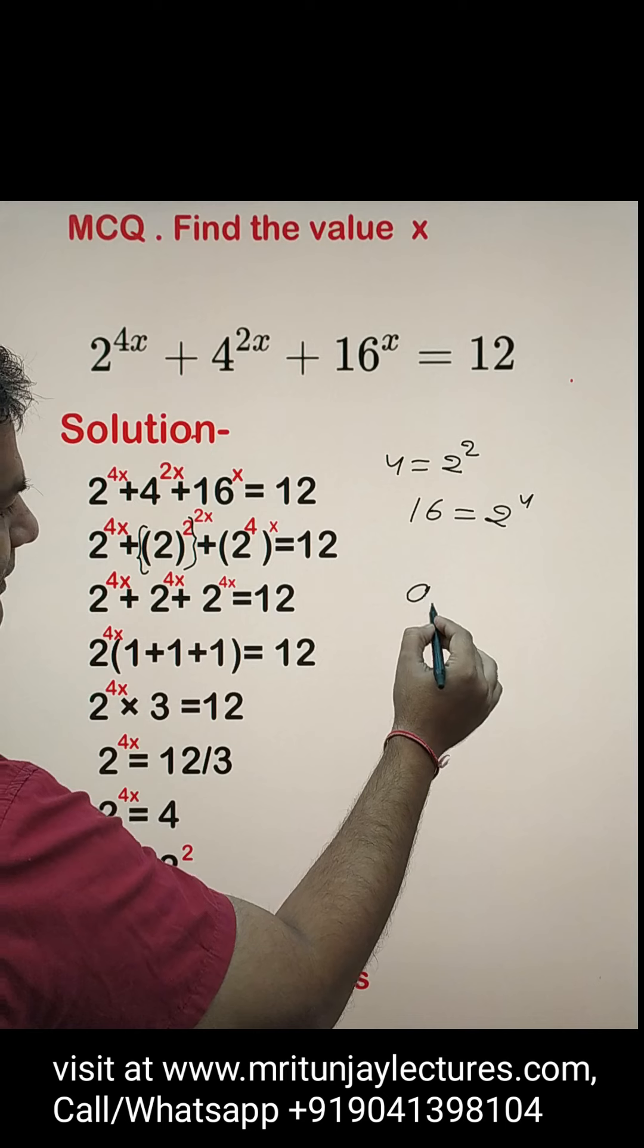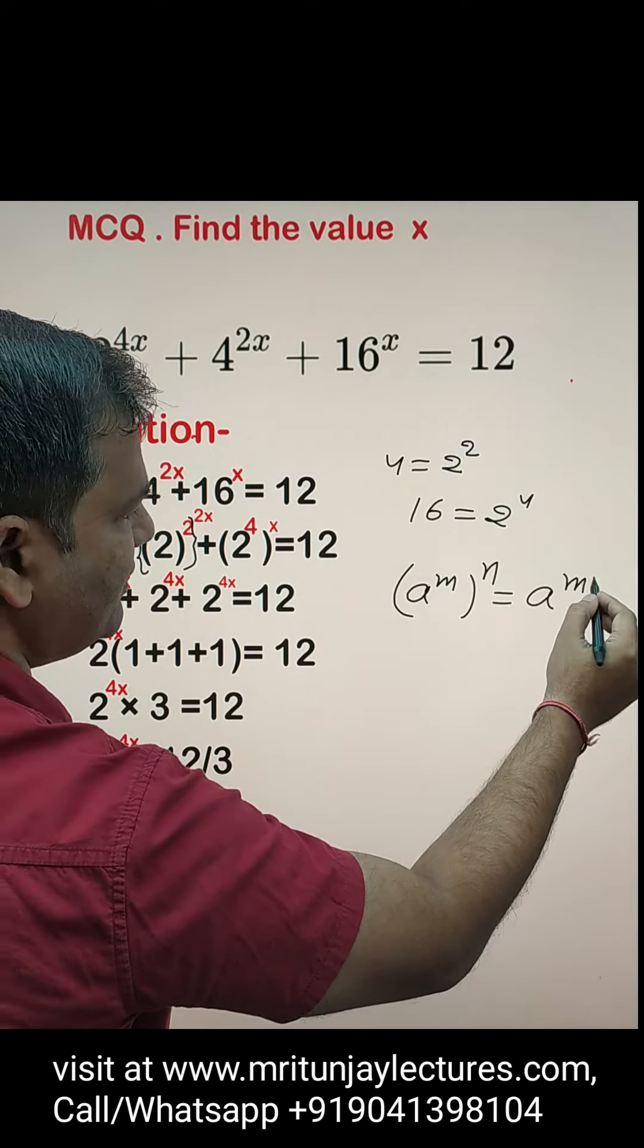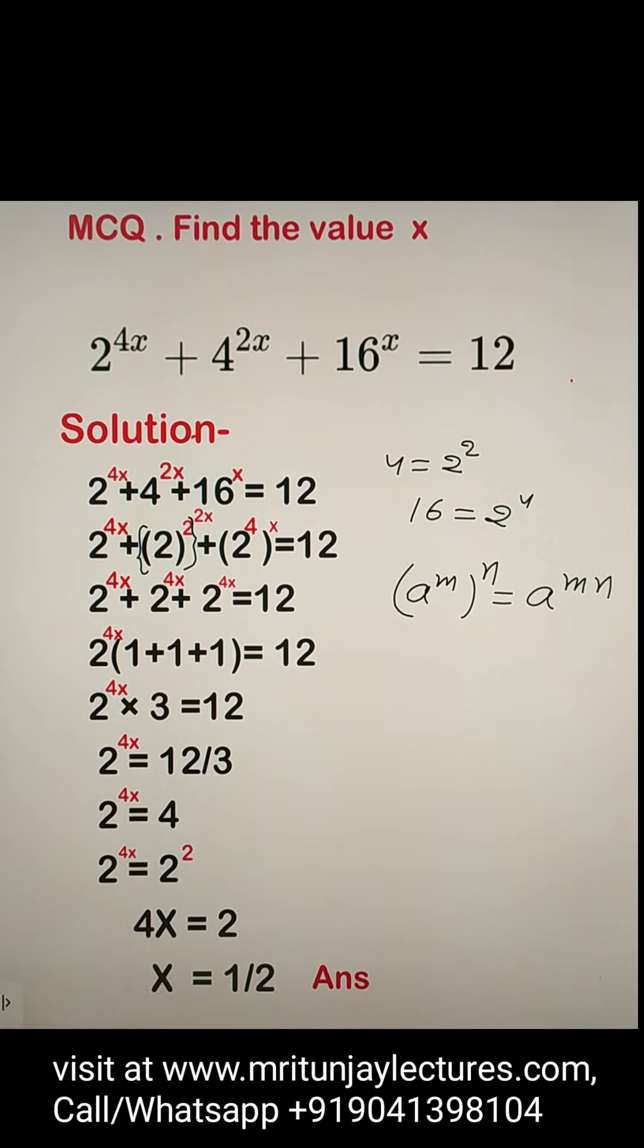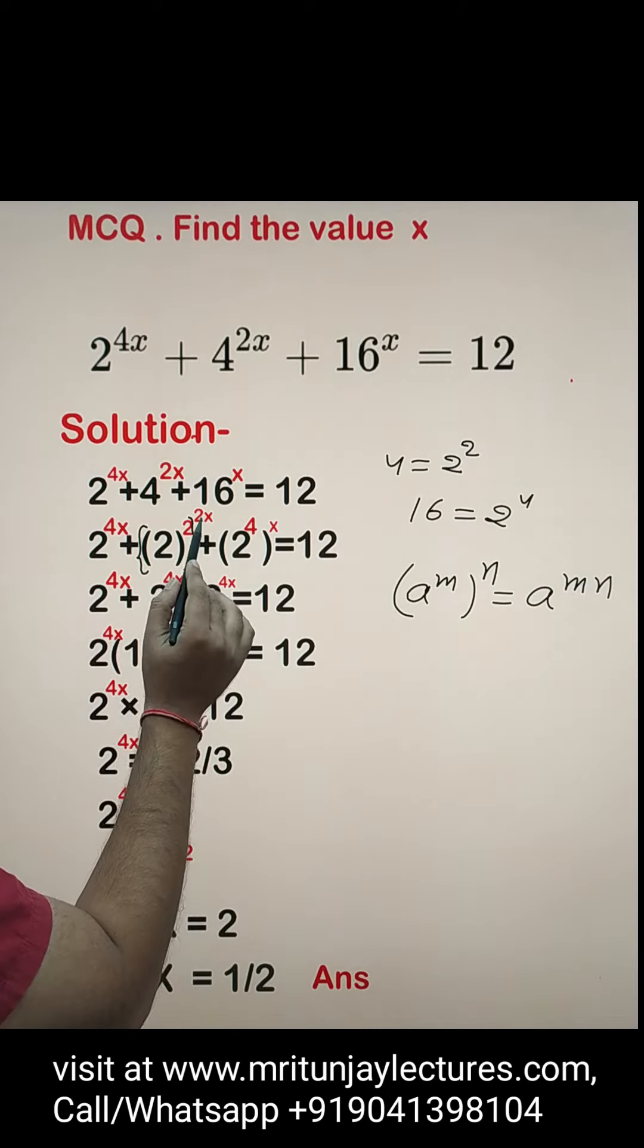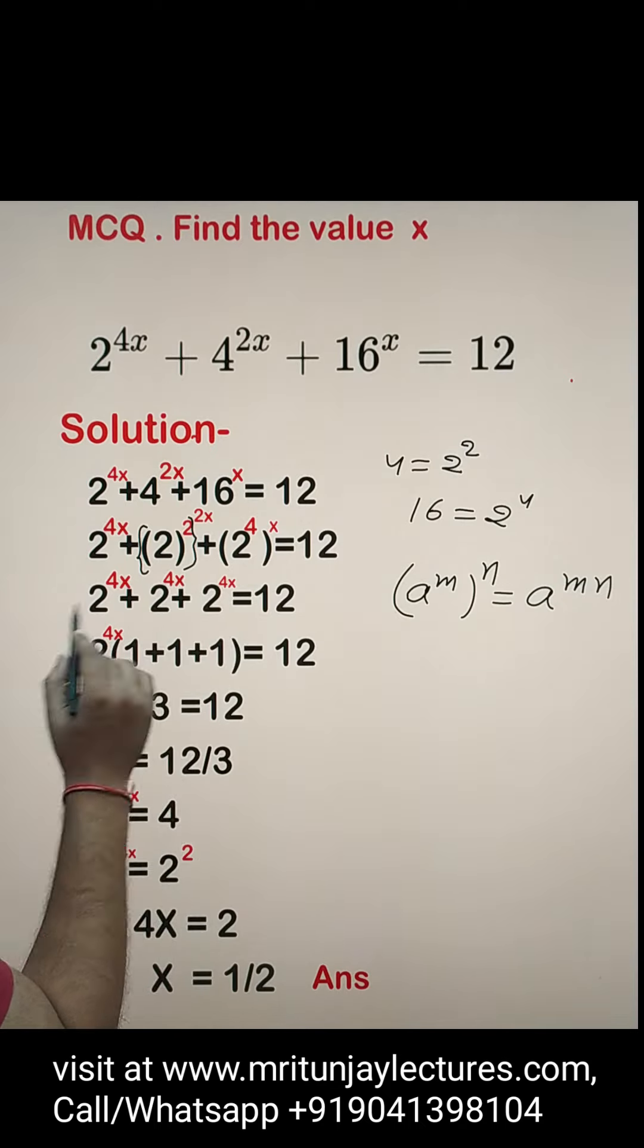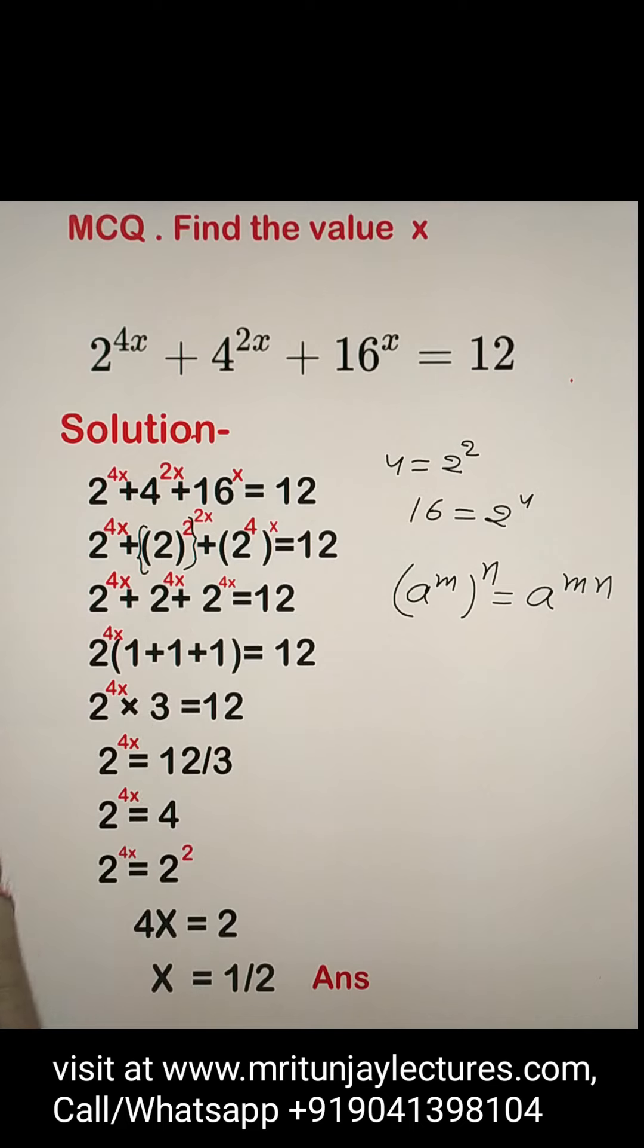Now, after that, a to power m to whole power n is how much? a to power m into n. So simply this one 2 to power 4x plus 2 into 2x, that is 2 to power 4x plus 2 to power 4x, this will be equal to 12.